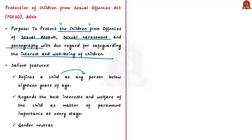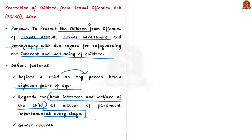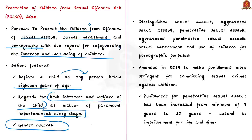According to this act, a child is any person below 18 years of age. It regards the best interest and welfare of the child as a matter of paramount importance at every stage, to ensure the healthy physical, emotional, intellectual and social development of the child. One salient feature is that this law is gender neutral, meaning the provisions are the same for all children irrespective of gender under 18 years of age. The act defines different forms of sexual abuse including penetrative sexual assault, non-penetrative assault, sexual harassment and pornography.